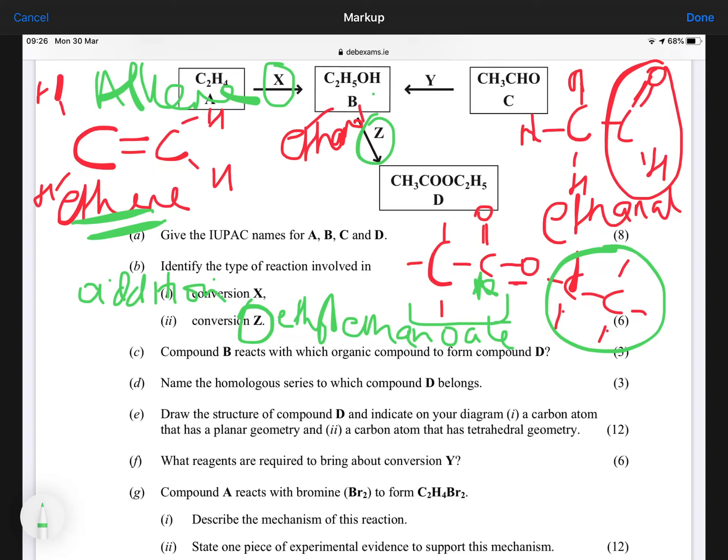C then says, compound B reacts with which organic compound to form D? Well, B is ethanol, and you're forming ethyl ethanoate for D. So what would you need to add to ethanol to make ethyl ethanoate, ethanoic acid? Name the homologous series to which D belongs. It belongs to an ester.